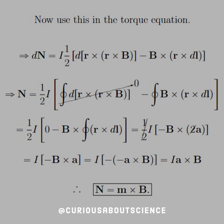Now we substitute everything back into the torque equation. Recalling from a couple of steps ago, the torque equals I times R cross DL cross B — the purple term. We solved for the purple term after applying the differential product rule and the vector identity, then substitute it in. We integrate, using closed contour integrals, to find the torque.